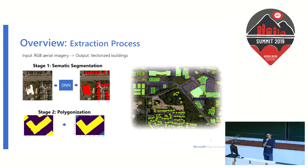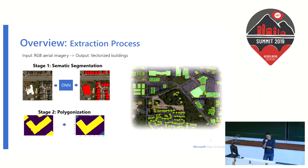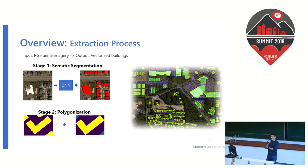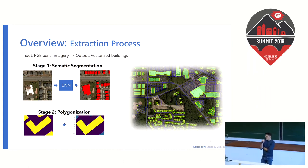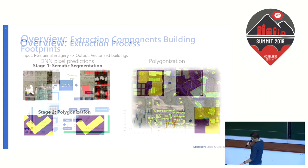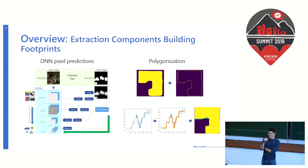At the input of the pipeline there is a three-channel RGB imagery. The pipeline processes these images and produces vectorized buildings. There are two stages: the first is semantic segmentation, which for each pixel in the image determines whether a building is on it or not, and the second, which we call polygonization, converts these pixel blobs into polygons.